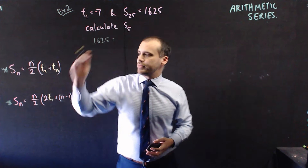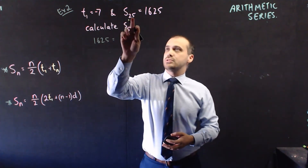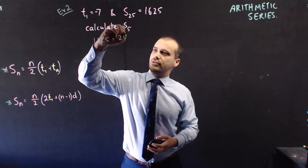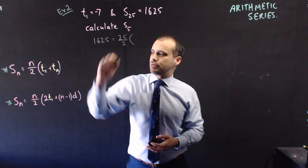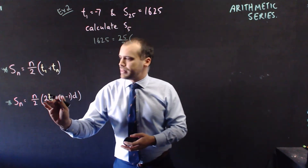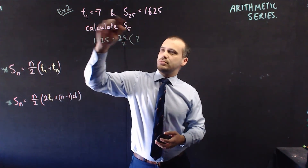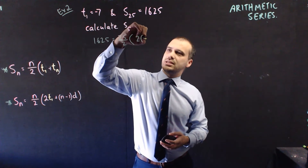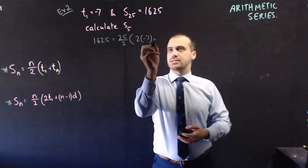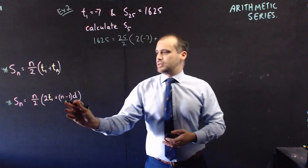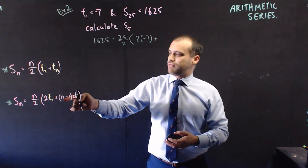1625. We know that the number of terms is 25 — 25 divided by 2 — bracket, 2 times the first term. 2 times the first term. The first term is negative 7.